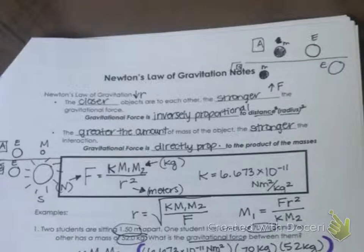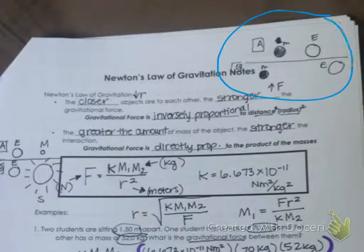We go through the first one, looking at the relationship between gravitational force and distance. So I draw this picture up here, and I ask them to talk to their partner and figure out which situation A or B will have a greater gravitational force between the Earth and the Moon.